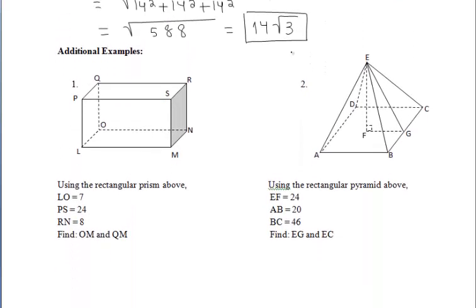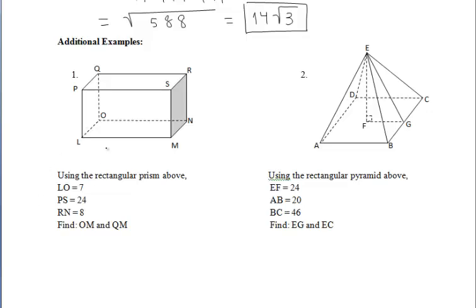Let's take a look at the two additional examples below. I'm going to go ahead and mark the first one. It says we're using the rectangular prism above. So we know that LO has a length of 7. We know that PS is 24, and we know that RN is 8. We want to find OM and then QM. Well OM is going to be the diagonal of that face LMNO at the bottom of the figure. Let's take a look up here. We know that PS is 24.